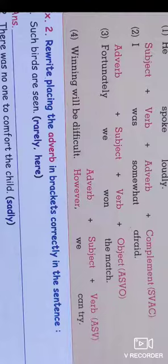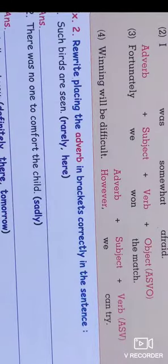The fourth example is 'The winning will be difficult; however, we can try.' In the second part of this sentence, 'however' is the adverb, 'we' is the subject, and 'can try' is the verb. Here 'however' functions as a connecting adverb linking the two sentences.